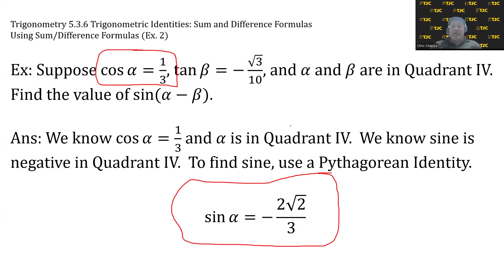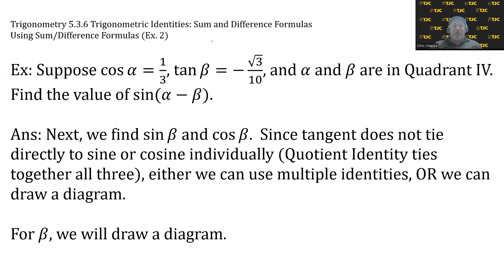We also need sine and cosine of β. We've got a slight problem - we were given tangent, and there's no identity that directly ties tangent to either sine or cosine individually. A quotient identity does, but using sin/cos = tan would still have too many unknowns. Plus, we couldn't say cosine is 10 and sine is √3, because both are outside the range of cosine and sine. We can use multiple identities - for example, turn tangent into secant using a Pythagorean identity, reciprocate the secant to get cosine, then use a Pythagorean identity to get sine. Or we could draw a diagram.